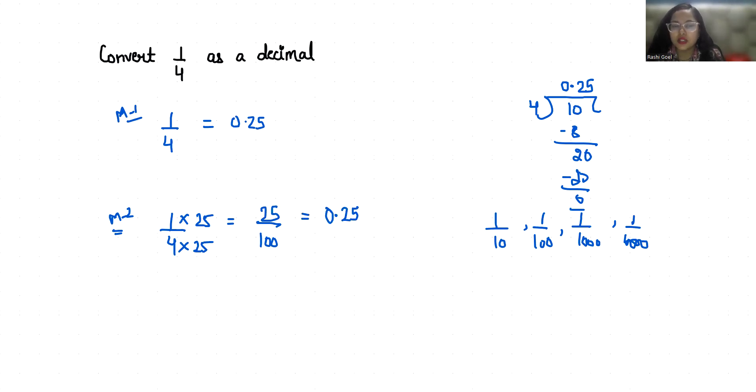So these are the two methods for how you can convert 1 by 4 as a decimal. I hope it's clear and you find it useful. Please give us a thumbs up and subscribe to my channel. Stay tuned for more upcoming videos.